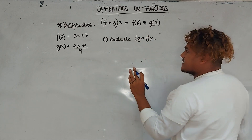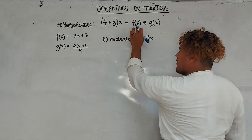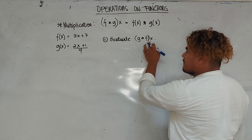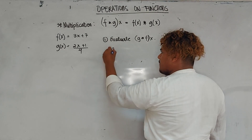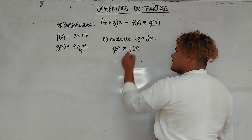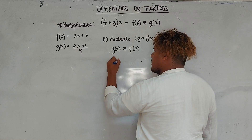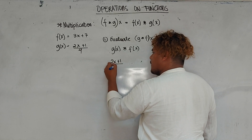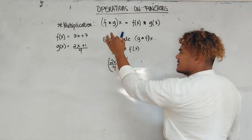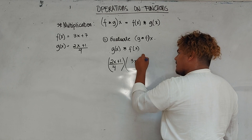The concept states that f times g of x is just equal to f of x times g of x. Therefore, g times f of x is equal to g of x times f of x. So what is the value of g of x? That is 2x plus 1 over 4. What is the value of f of x? That is 3x plus 7.